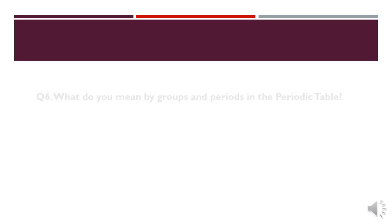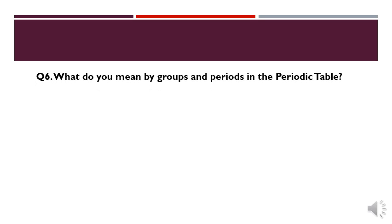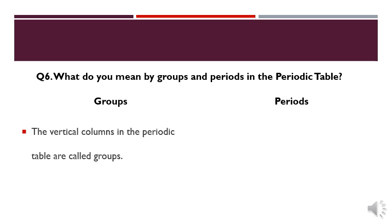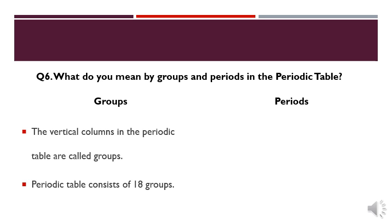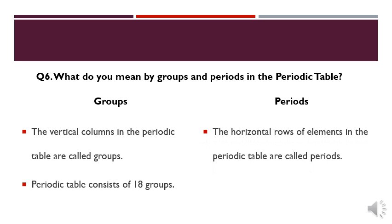Now another short question: what do you mean by group and period in a periodic table? The vertical column in the periodic table is called a group, and the periodic table consists of 18 groups. Whereas horizontal rows are known as periods in a periodic table, and the periodic table consists of 7 periods.